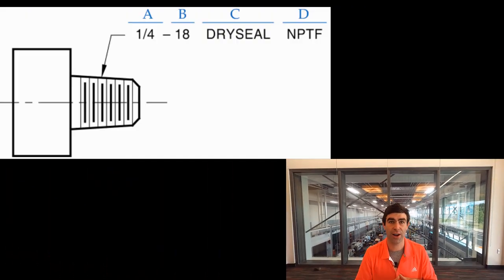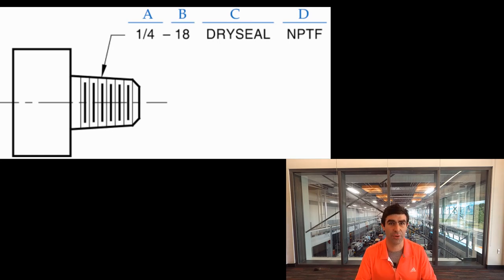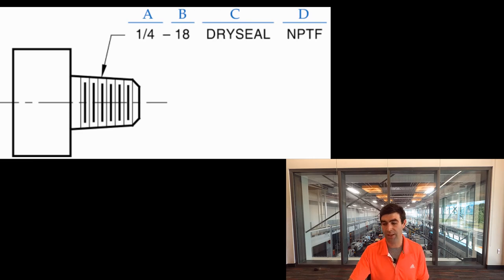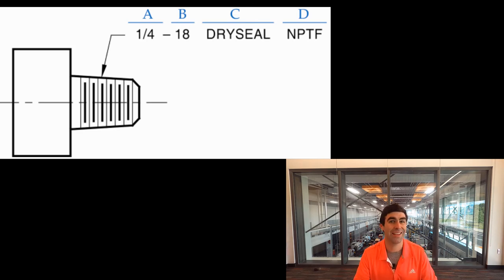Pipe threads work a little differently. Instead of giving the major diameter, they give the nominal diameter as a fraction — this is a table lookup. Pipe threads don't have things you can directly measure, so a quarter-inch nominal pipe thread won't actually measure a quarter inch. Then the callout gives the threads per inch, the form such as dry seal, and the pipe series symbol such as MPTF.